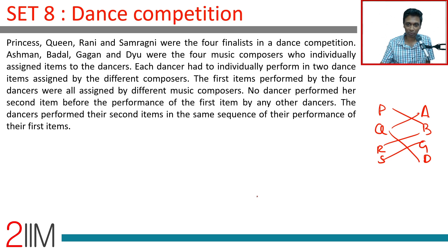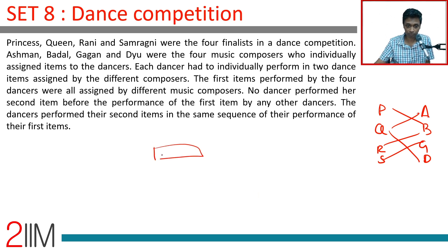The first items performed by the four dancers were all assigned by different music composers. No dancer performed her second item before the first performance of the first item by any other dancer. So P, Q, R, S have to appear in some order and then reappear in perhaps some other order.